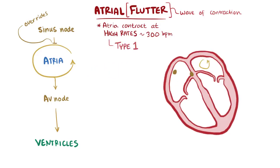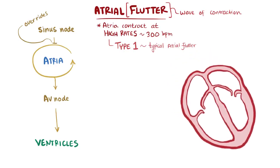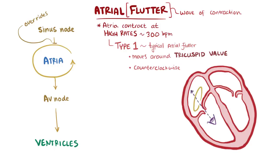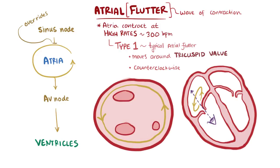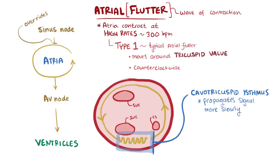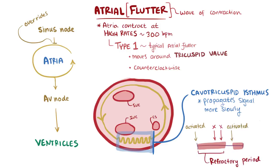There are actually two types. Type 1, or typical atrial flutter, is more common and is caused by a single reentrant circuit that moves around the annulus, or the ring of the tricuspid valve of the right atrium, usually in a counterclockwise direction when viewed looking up through the tricuspid valve. So imagine that you're an eyeball looking up through the valve — you'll see the superior vena cava or SVC, the inferior vena cava or IVC, and the coronary sinus or CS. In this case, a stretch of tissue along the pathway called the cavotricuspid isthmus propagates the signal more slowly than the surrounding tissue. Tissue that was just activated can't be activated again until a certain amount of time has passed, which is called the refractory period. So that slow propagation through the isthmus gives the tissue enough time to be out of refractory, and therefore the circuit can loop back on itself.